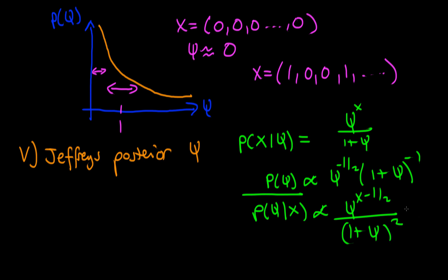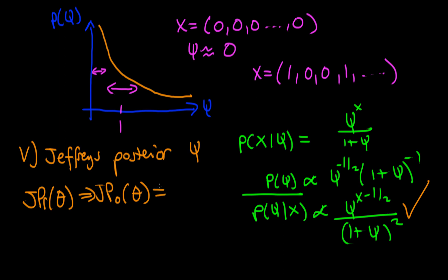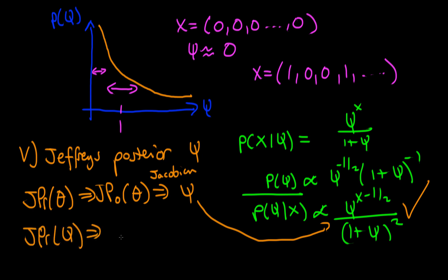Checking back, this is exactly the same posterior obtained via the other route: first working out Jeffrey's prior in terms of theta, then the Jeffrey's posterior in terms of theta, then applying the change of variables — the Jacobian — to get the posterior in terms of psi. Both routes give the same result, confirming consistency.